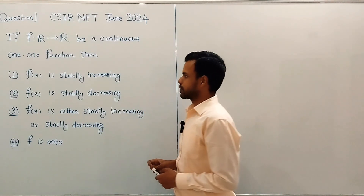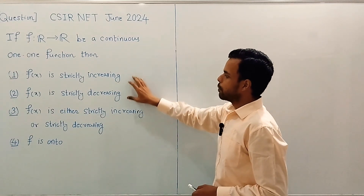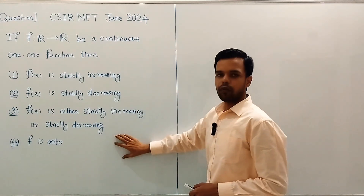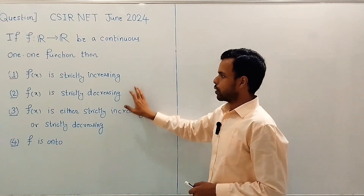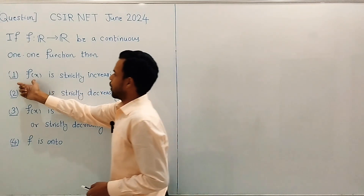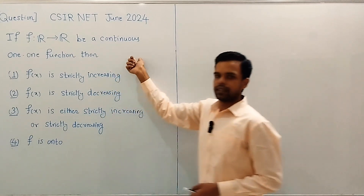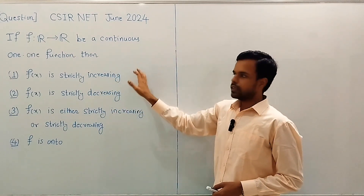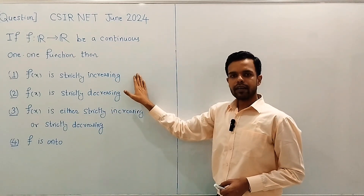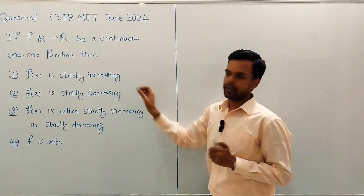Let us begin the solution. We will verify each of these four options one by one. Starting with option 1 — f(x) is strictly increasing. Is this a true statement? No, it is not necessarily true.